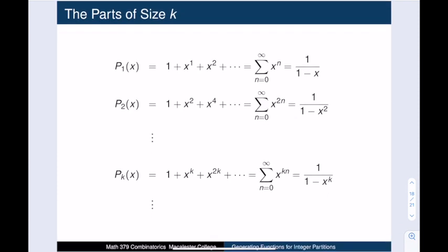We get a similar generating function for any integer k. There is one way to write any multiple of k as the sum of k's, and zero ways for non-multiples. So the parts-of-size-k generating function is 1 + xᵏ + x²ᵏ + x³ᵏ + ... , which converges to 1/(1 − xᵏ).